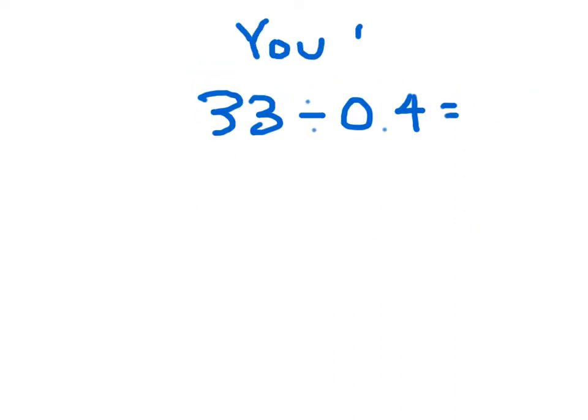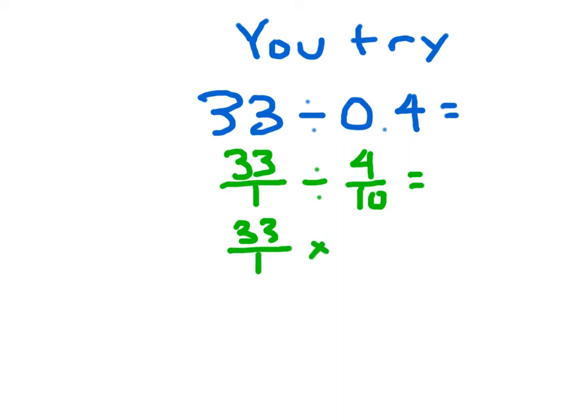Your turn to try. Set this problem up. Did you set it up correctly? 33 over 1 divided by 4 over 10. Did you write the division problem now as a multiplication problem? 33 over 1 times 10 over 4, that reciprocal. Hopefully you did this right, multiplying the numerators: 330, and 1 times 4 is 4. And then you had some division work to do.